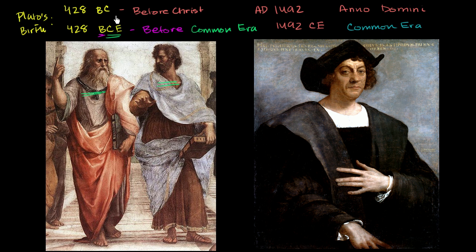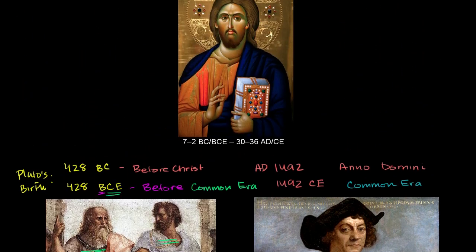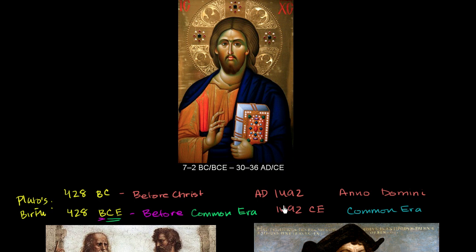All of these things refer to the same count. When we say 428 BC, it implies 428 years before the birth of Christ. 1492 AD means 1492 years since the birth of Christ. But the reality is we're not really quite sure when Christ was born. So Columbus didn't sail across the Atlantic exactly 1492 years after the birth of Christ. Most historians put the birth of Christ at 7 to 2 BC or BCE, and his death at 30 to 36 AD or CE.